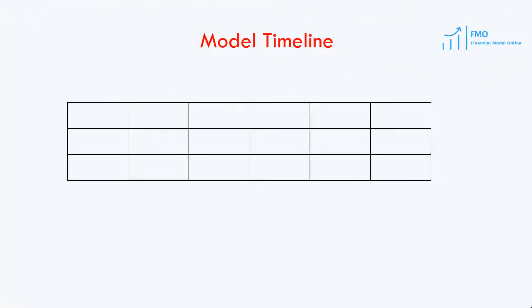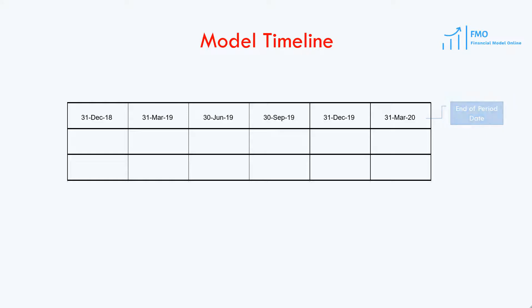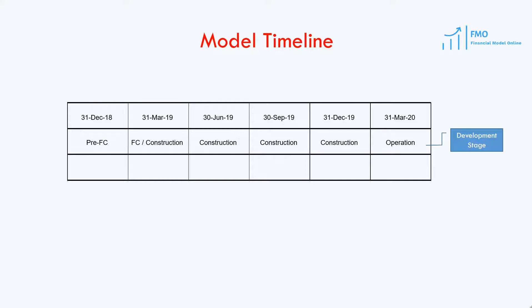At the top of each sheet in our Excel model, we will have the end of period dates, which will indicate the current period's end date. Our model will be a quarterly model, therefore we will have the end of the quarter as the end of the period date. Then we will have a timeline, which will indicate the stage we are at in our model — whether it is pre-financial close, financial close, construction, or operations stage. We will assign colors to the timeline to visually assist us in identifying the stage we are at in the model.